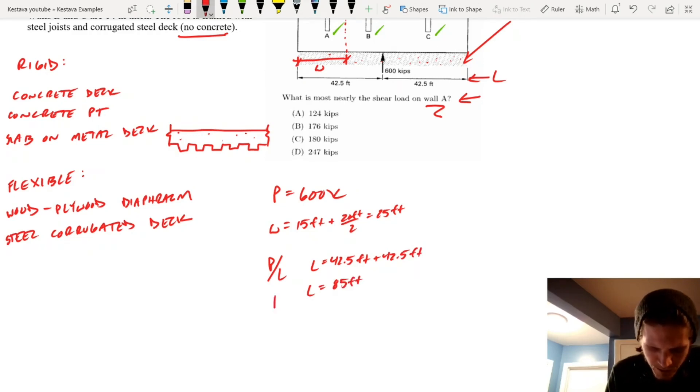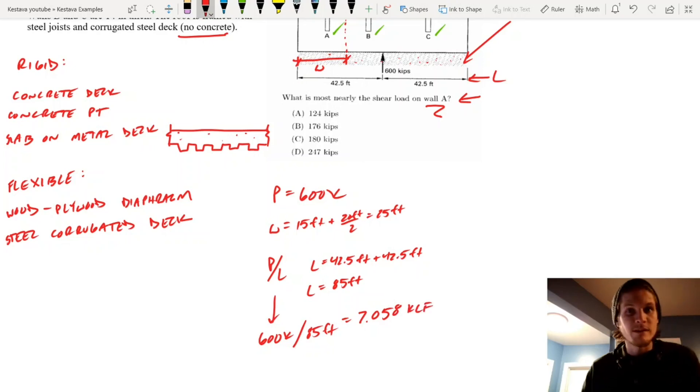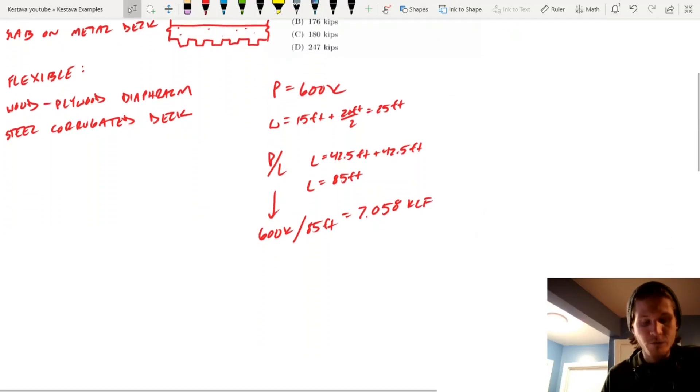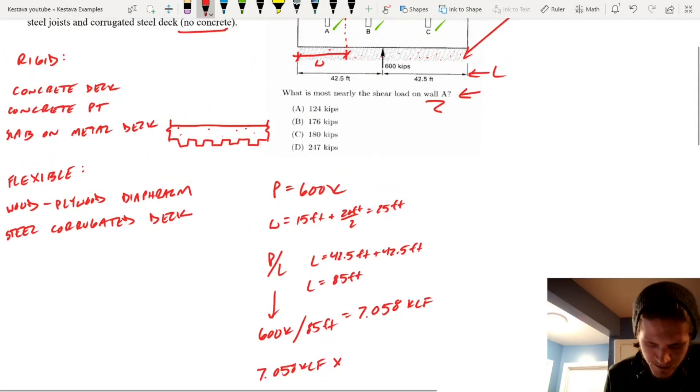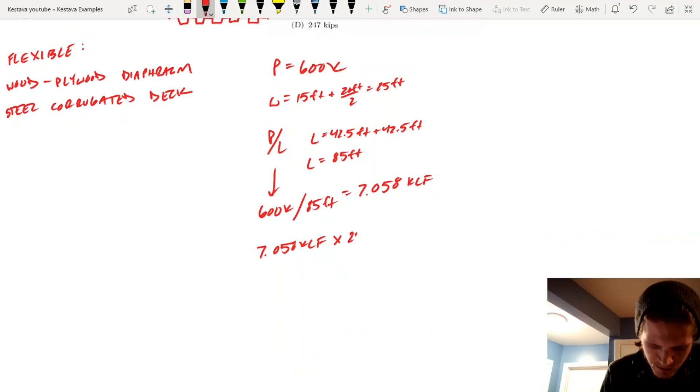So, P over L is just 600 kips. You guys are rolling on this now. 600 kips divided by 85 feet. That gets us 7.058 klf. So, that's kips per lineal foot, and now you just multiply that by your trip width for shear wall A, which we know is W, which we know is 25 feet.